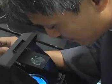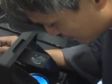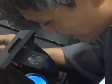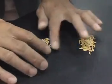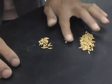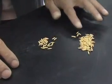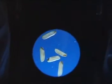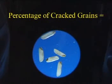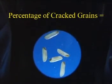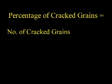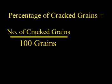Using the paddy crack detector, count the number of cracked grains in a 100-grain sample, then compute the percentage of cracked grains using this equation: the number of cracked grains divided by 100 grains, then multiply by 100 to get your percentage.